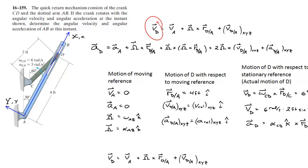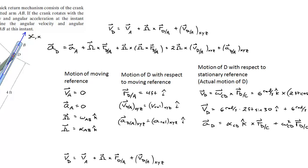Once you recognize this kind of problem, I'd recommend writing out the relative velocity equation and the acceleration equation for rotating axes. They're long, kind of complicated equations and it's a little difficult to interpret what each term means at first. What helps me is to write out three different columns: the first being the motion of the moving reference, the second being the motion of point D with respect to the moving reference, and the third being the motion of D with respect to a stationary reference — the actual motion of D.